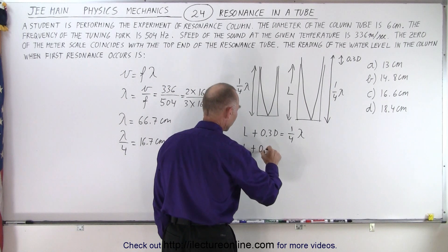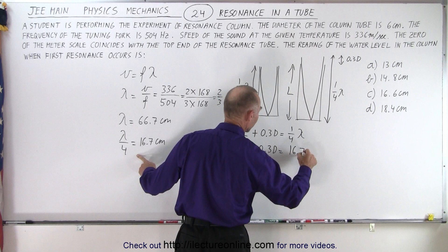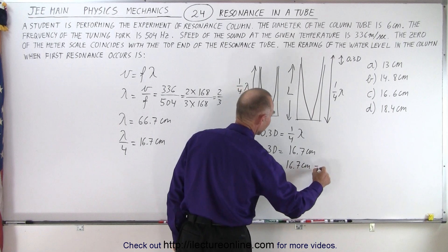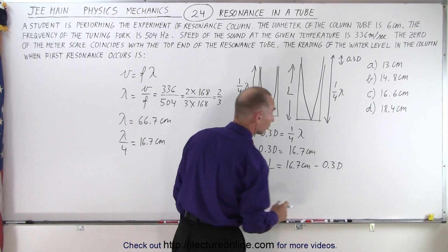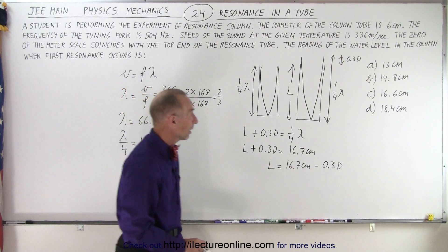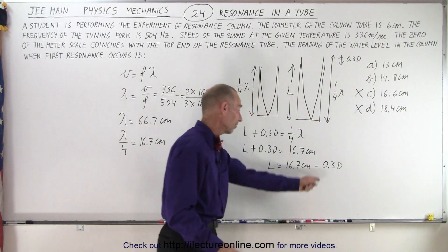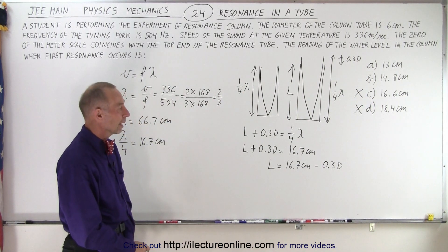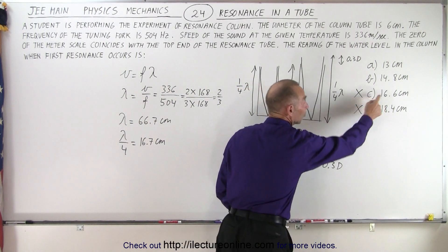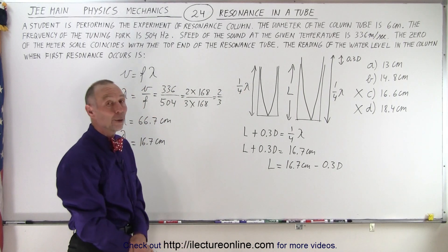So we have L plus 0.3D is equal to a quarter wavelength, which is 16.7 centimeters. Which means the length of the tube is equal to 16.7 centimeters minus 0.3 times D. In other words, the answer for the length of the tube must be less than 16.7. And that means that D is not a possible answer, and C probably wouldn't be a possible answer either because it's too close to 16.7. And notice, if you don't take this into account, the length would be equal to that. So that would be the answer chosen if you ignore this additional distance there.